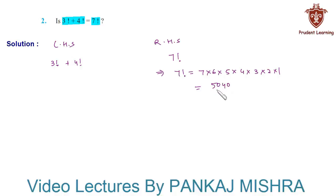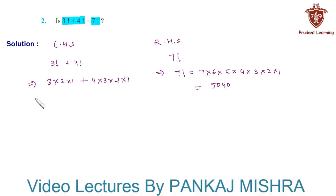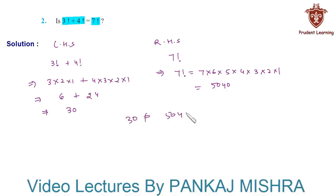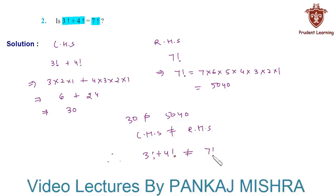So 7! = 5,040. On the left-hand side, 3! = 3 × 2 × 1 = 6, and 4! = 4 × 3 × 2 × 1 = 24. Adding these gives 6 + 24 = 30. Clearly, 30 is not equal to 5,040, so LHS ≠ RHS. Therefore 3 factorial plus 4 factorial is not equal to 7 factorial.